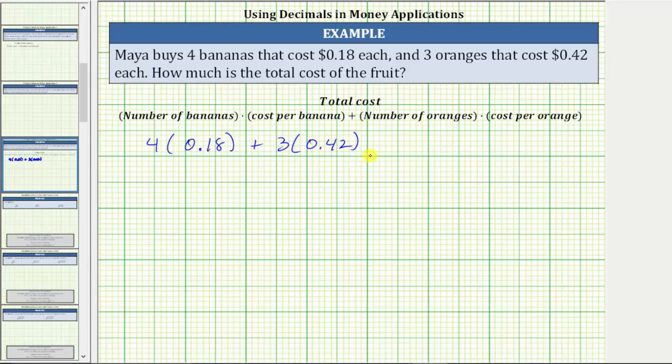To simplify the expression, we follow the order of operations and therefore we multiply before adding.